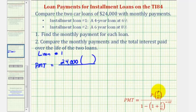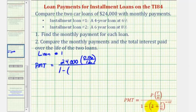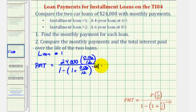R is the annual interest rate expressed as a decimal, and N is the number of payments per year. For loan one, the rate is six percent, so that's 0.06 divided by N, which is twelve since we're making monthly payments. This is divided by one minus the quantity one plus R divided by N, which is 0.06 divided by twelve, raised to the power of negative N times T. T is the time in years, and loan one is four years, so T is four.